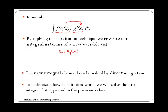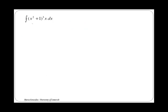To understand how substitution works, we are going to solve the first integral that appeared in the previous video. In this case, we have the integral of x squared plus 1 to the 3 by x dx. In the previous video, we solved that in this case, the inside function is x squared plus 1, as it is inside x to the 3. And then we also saw that we have x multiplying, which is almost the derivative of g, as the derivative of g will be 2x.